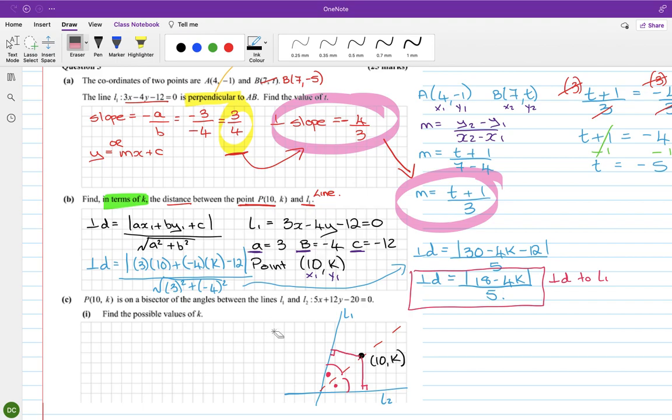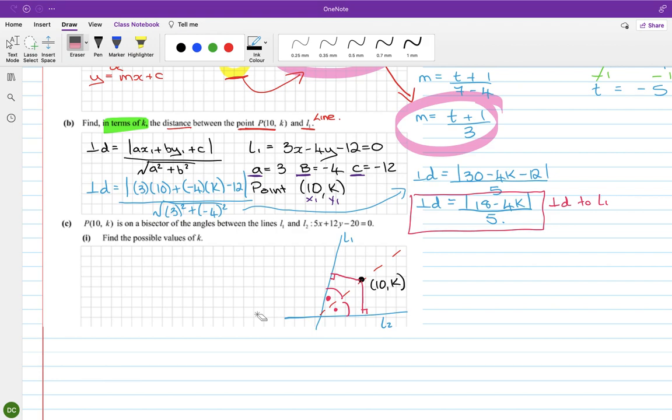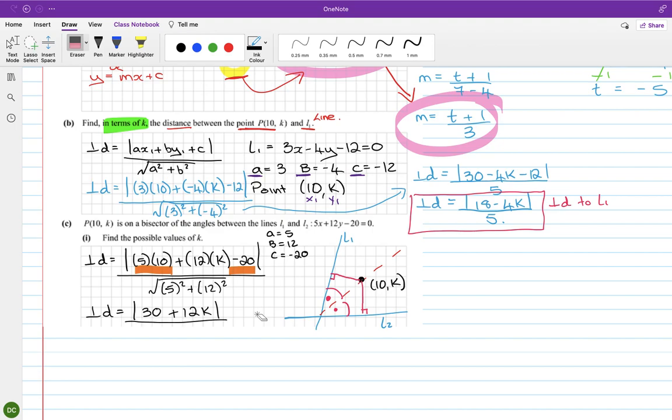So let's do it. Perpendicular distance—so L2 is over here and we have a is 5, b is 12, and c is minus 20. x1 and y1 hasn't changed, so it is ax1 + by1 + c over square root of 5 squared plus 12 squared. So the perpendicular distance is 50... so this is 50 minus 20 is 30 plus 12k over—25 and 144 is 169—and the square root of 169 is 13.